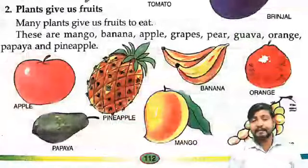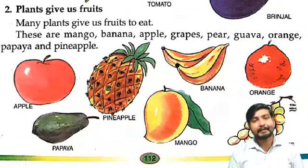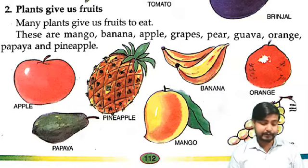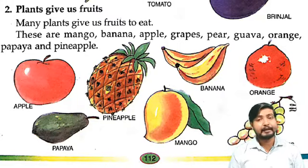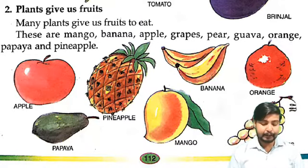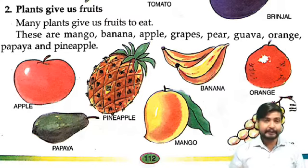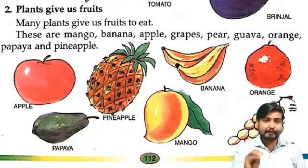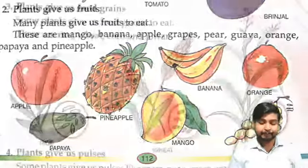Then plants give us fruits. Many plants give us fruits to eat. Yeh bhoat sare plants hai jo hum khaate hai, fruits dete hai khaane ke liye. Those are mango, tomato, banana, apple, grapes, pear, guava, orange, papaya, pineapple. Piche hai, tasmini me dekho. Yeh jitne bhi sare fruits hai, yeh sab hum plants se hi paate hai.